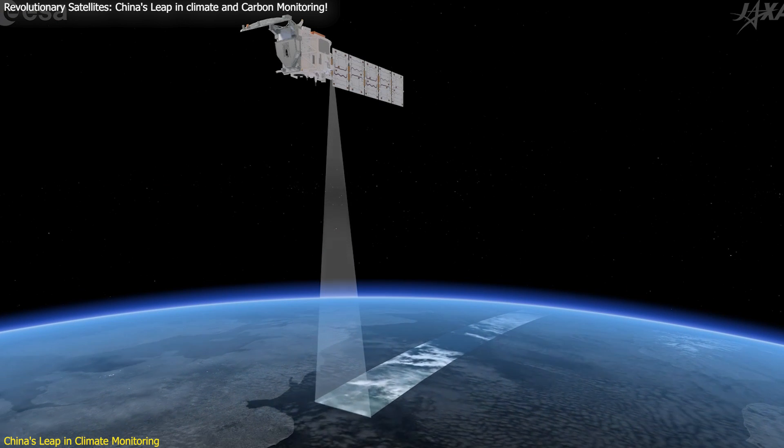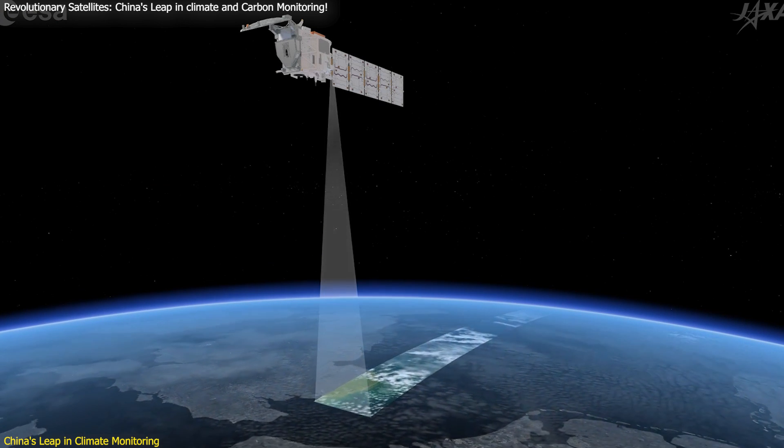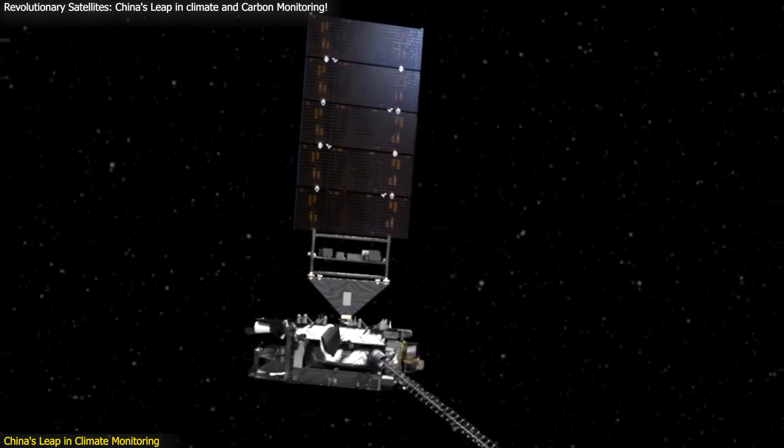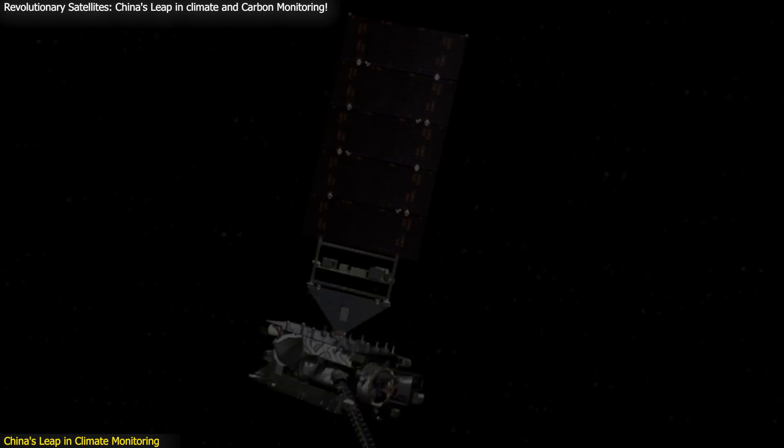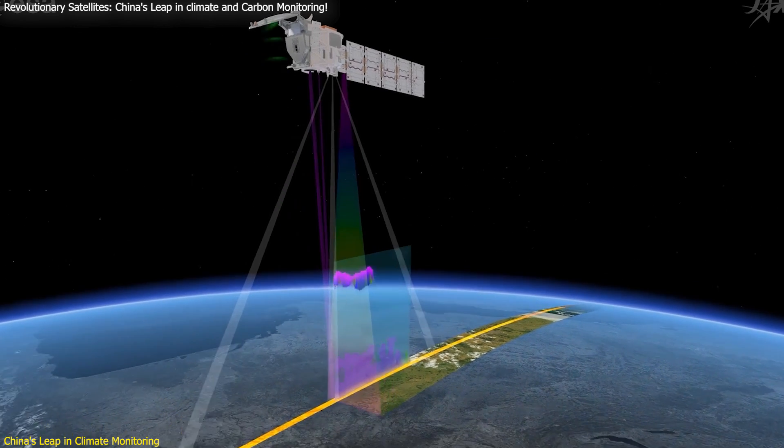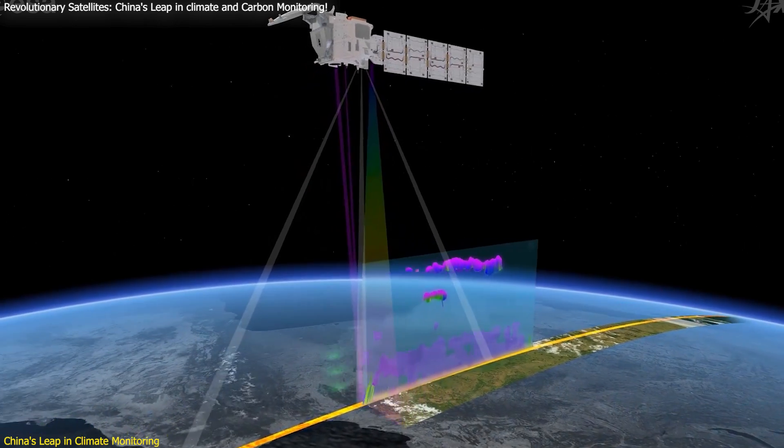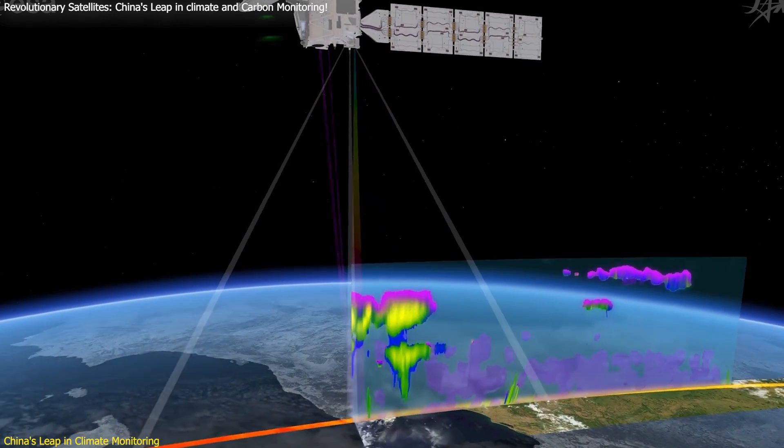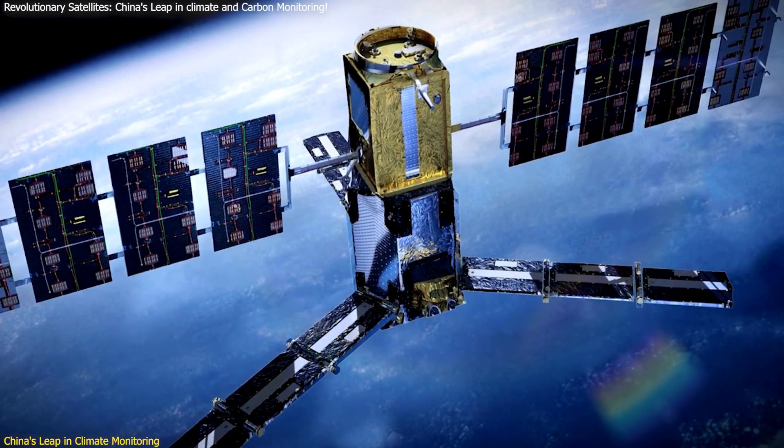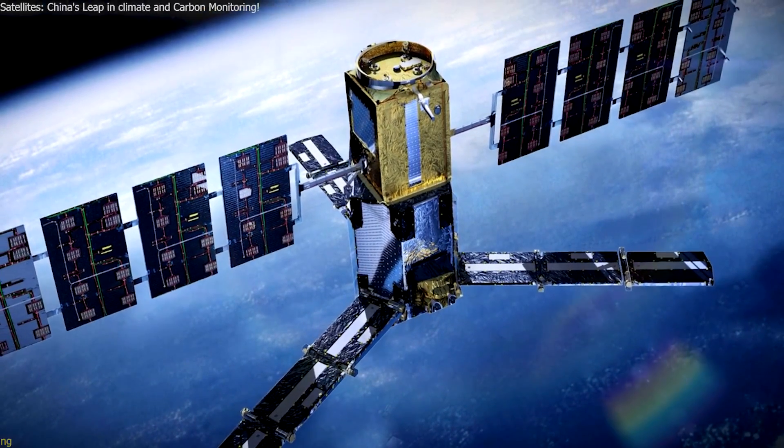Utilizing cutting-edge technologies like active laser detection and hyperspectral imaging, these satellites provide unprecedented precision in tracking pollutants, greenhouse gases, and carbon sinks. In this video, we'll explore how these technological marvels work, their wide-ranging applications, and their vital role in global climate efforts. Stay tuned to discover why these satellites are a game-changer in the fight against climate change.